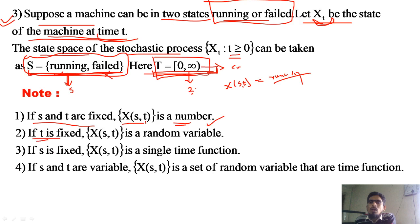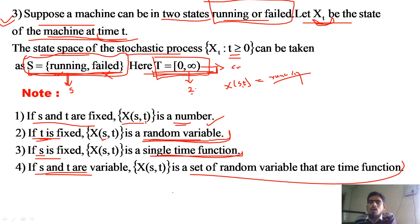If t is fixed, x(s, t) is a random variable, as we studied in unit 3 — where time was not discussed and only the sample space was numbered. If s is fixed, x(s, t) becomes a single time function — purely a function of t. If both s and t are variable, it is a set of random variables that are a time function — this is the stochastic process we are studying in this unit.